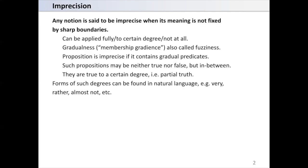Any notion is said to be imprecise when its meaning is not fixed by sharp boundaries. It can be applied fully to a certain degree or not at all. Gradualness, or membership gradients, also called fuzziness.